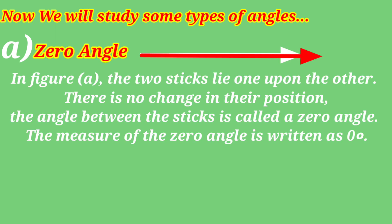Now we will study some types of angles. A zero angle. In figure A, the two sticks lie one upon the other. There is no change in their position. The angle between the sticks is called a zero angle. The measure of the zero angle is written as zero degrees.